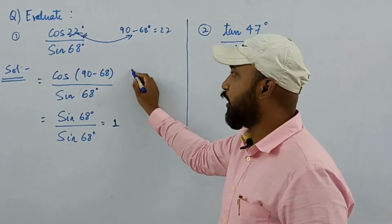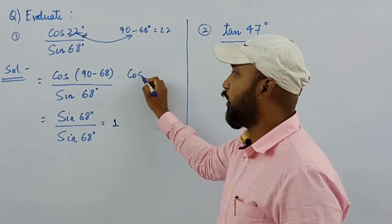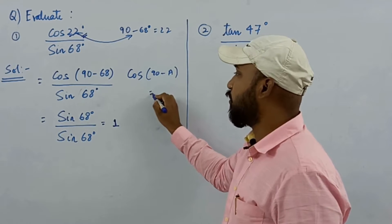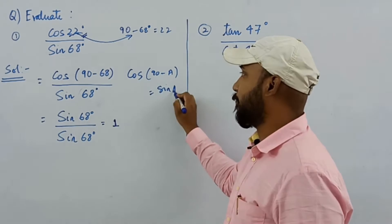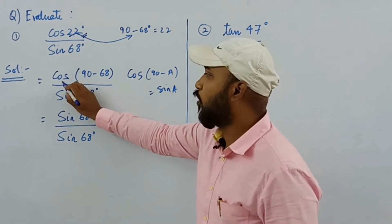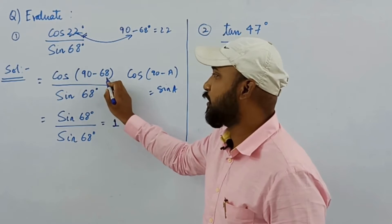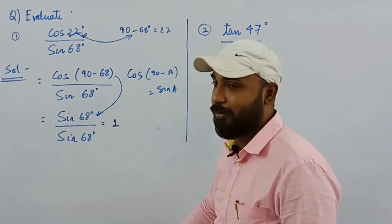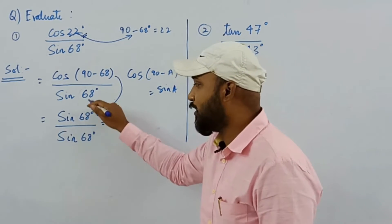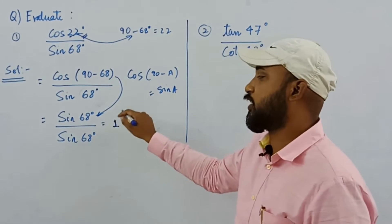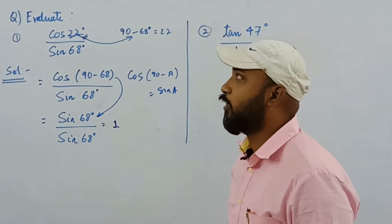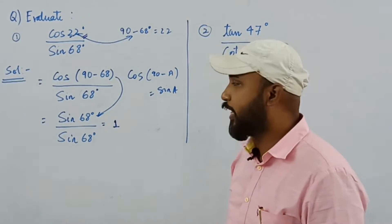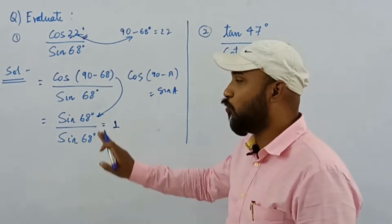You already know the formula: cos(90 − A) = sin A. So cos(90 − 68) becomes sin 68, giving us sin 68 divided by sin 68, which equals 1. So the value of cos 22 divided by sin 68 is 1.